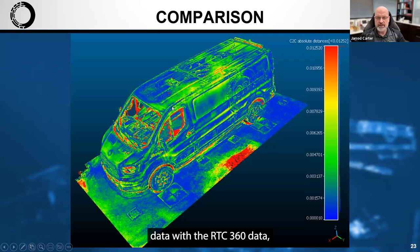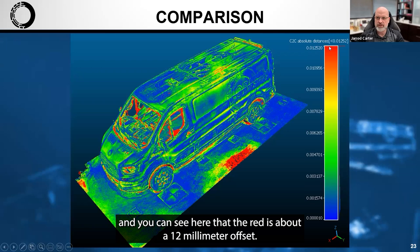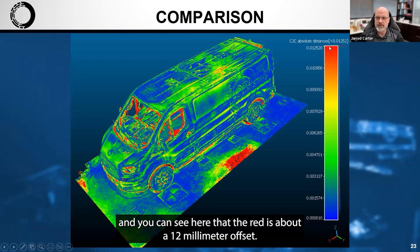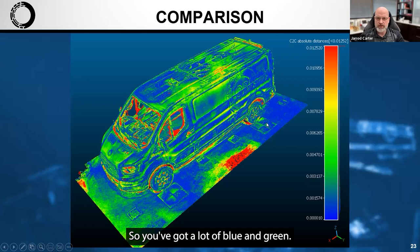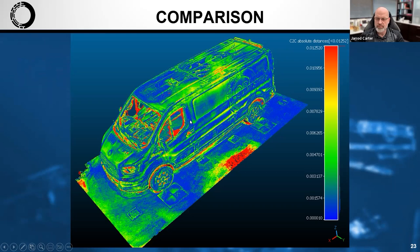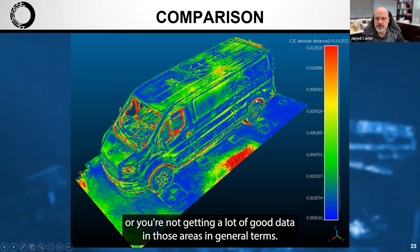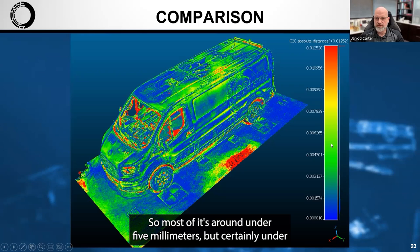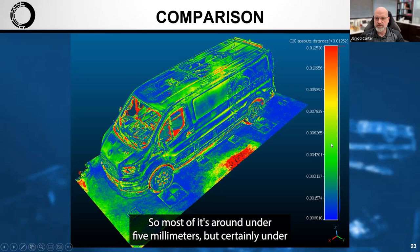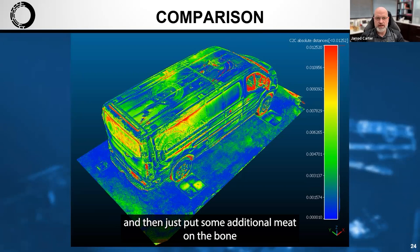I also did an alignment of the Recon 3D data with the RTC 360 data and then did a color map to show the offset using nearest neighbors. The red areas show about a 12 millimeter offset, green is on the order of about 5 millimeters, and blue is on the order of about 1 millimeter. You've got a lot of blue and green. A lot of the red areas are just zones where there's bleed from different scans or areas without great overlap. In general terms, most of it is blue and green — so most of it is under 5 millimeters and certainly under a centimeter.